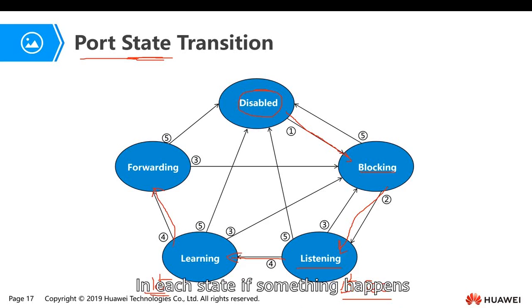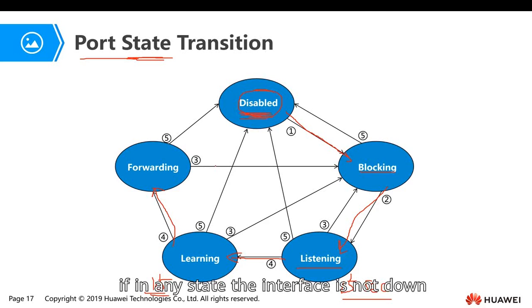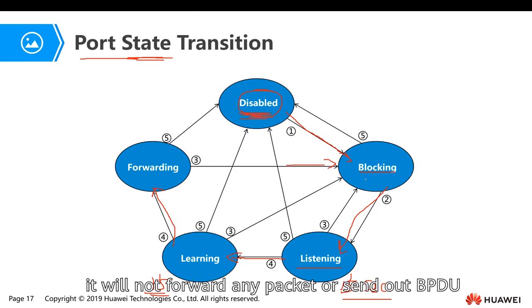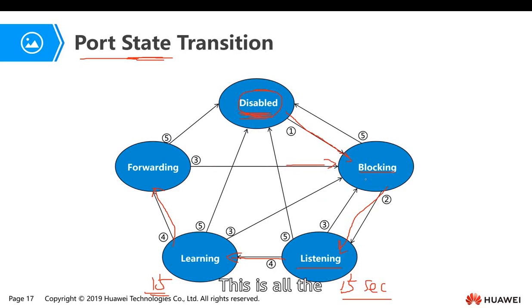In each state, if the link is pulled out and the interface goes down, then from any state it goes to the disabled state. If a sensing error happens, we may go back to the blocking state. In the blocking state, the switch is not forwarding packets, not sending out BPDUs, but it does accept BPDUs. This is the port state transition — the whole information on how STP is calculated.